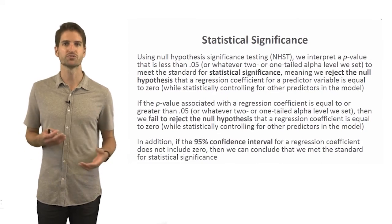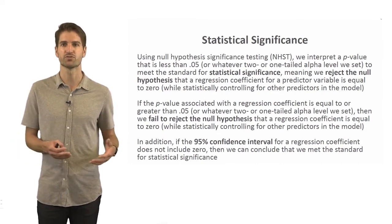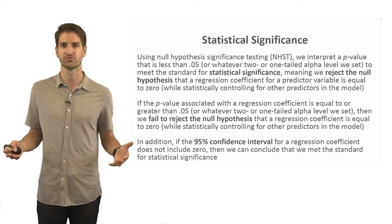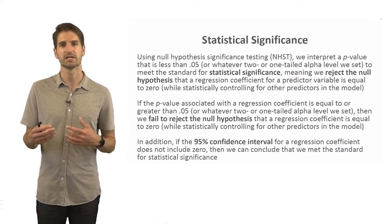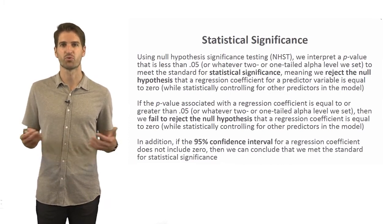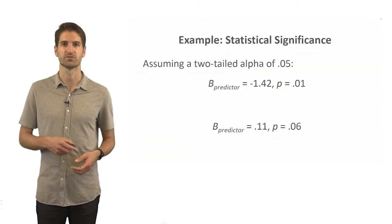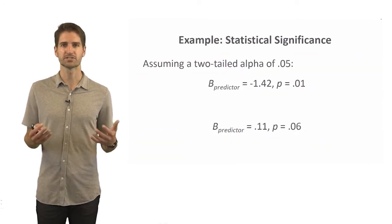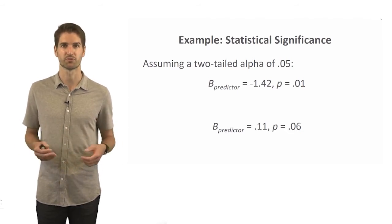We can also use confidence intervals to test for statistical significance. If the confidence interval does not include zero, we conclude there is statistical significance. The equivalent confidence interval that corresponds to an alpha of .05 is a 95% confidence interval. Let's use a couple of examples to illustrate the language and interpretation of statistical significance in the context of multiple linear regression.